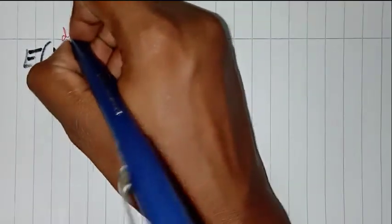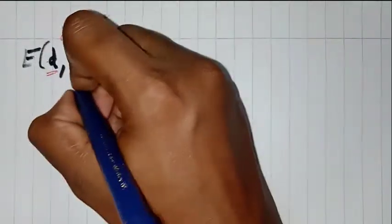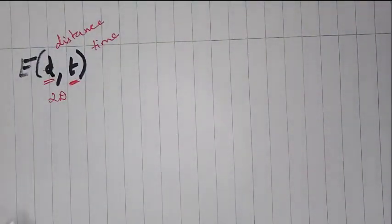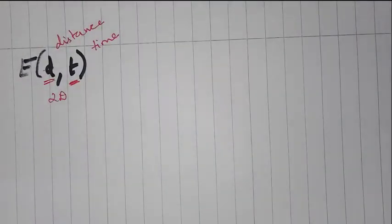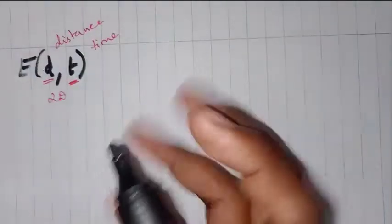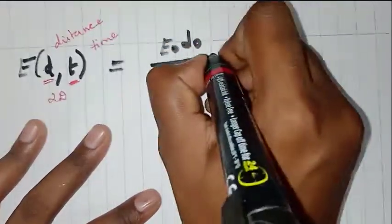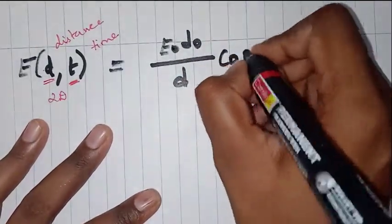We will talk about the general equation. Here, d is the distance between the transmitter and the receiver, and t is the time taken for travel, because whenever you send data from one point to another it takes some transmission time. The general equation is: E(d, t) = E₀·d₀ / d × cos(ωc × (t − d/c)), which includes a cosine term because we must account for the angle between transmissions.